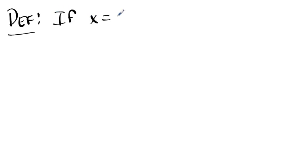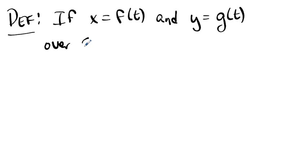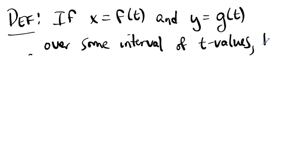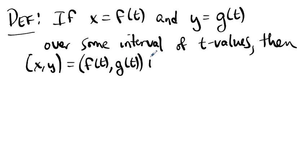So a quick definition to get us going. Let's suppose that x is some function of t and y is some other function of t over some interval of t values. Then the collection of ordered pairs (x, y), some function of t, some other function of t, is a parametric curve. The equations are called parametric equations. T is called the parameter.